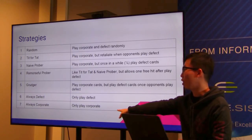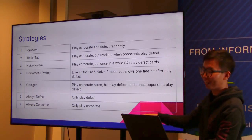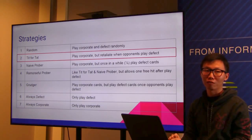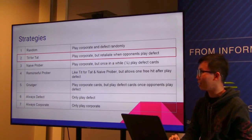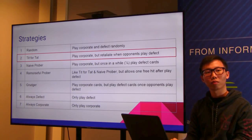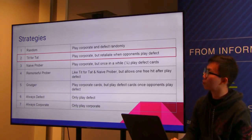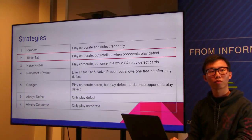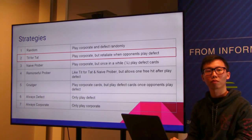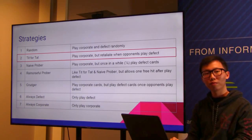Always Cooperate is the most naive strategy — always nice but easily exploited. The results showed that the most successful strategy was Tit-for-Tat. An important point is that in practical games, only the first one to defect benefits; the second defection doesn't affect your opponent because once they've defected, your retaliation doesn't change their outcome.